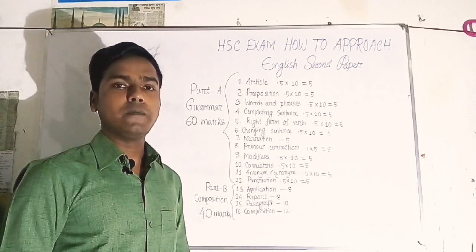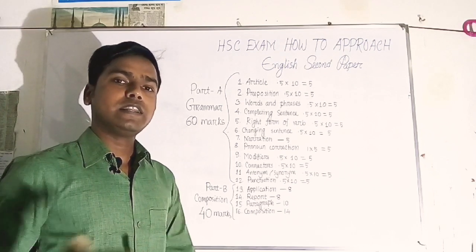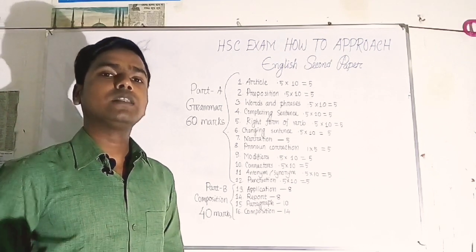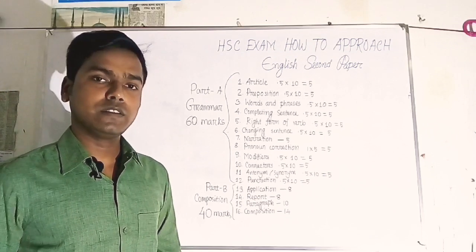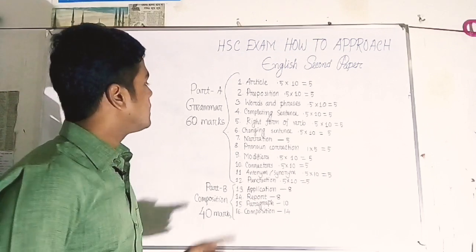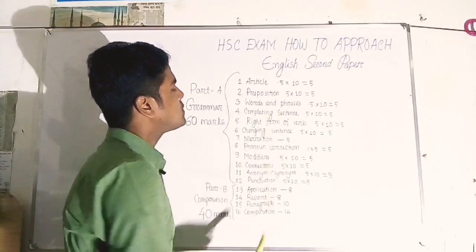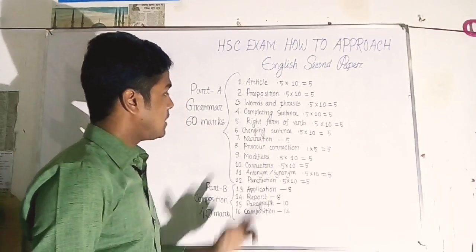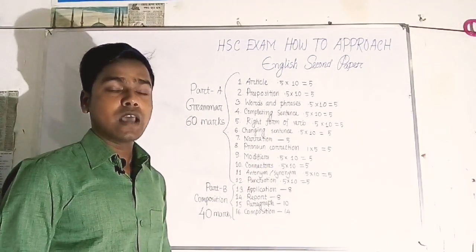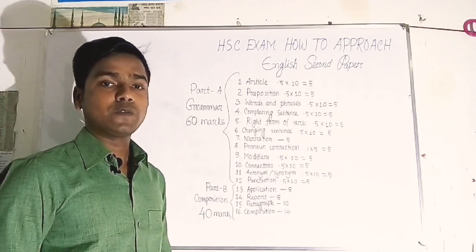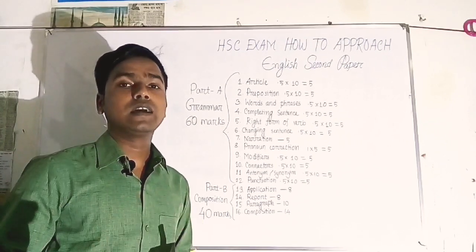Number 4 is Completing Sentences. Here you need to complete sentences — wherever a dash is given in a sentence, you must fill in that blank appropriately and write it together. Total mark is 5. Number 5 is Right Forms of Verb. For intermediate students this is very easy because the program gives you the right forms of verb in a box, so you just pick from there.